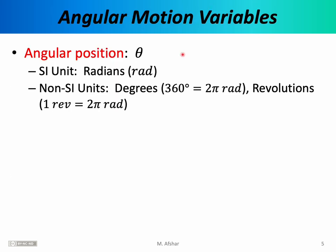Our goal in this lecture and the next is to understand angular motion the same way we understand linear motion. Our discussion of linear motion introduced variables x, v, and a — position, velocity, and acceleration. We want to do the same for angular motion and introduce angular motion variables. If an object like a wheel is rotating, a point on that object goes through an angular displacement. The angular position is denoted by the letter theta, with SI units of radians. Occasionally we'll use degrees, turns, revolutions, or cycles, but our preferred unit is radians.